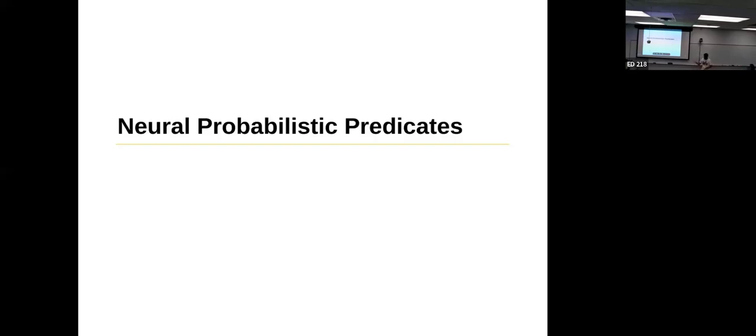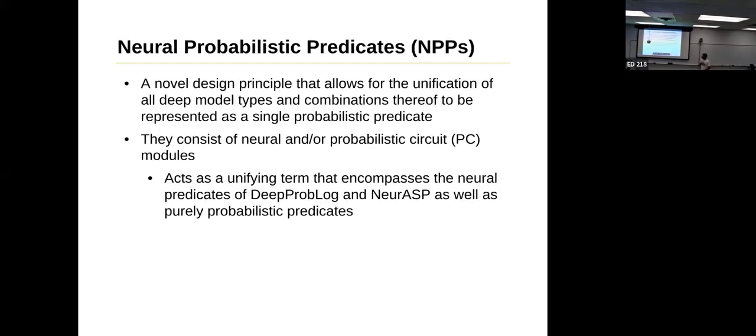Now that we've given you a rundown on DPPLs, we'll move on to neural probabilistic predicates. They're a novel design principle that allows for the unification of all deep probabilistic model types and combinations thereof to be represented as a single probabilistic prediction. They're mostly made up of neural and PC modules, and they act kind of like a unifying term that encompasses neural predicates of a DPPL as well as purely probabilistic circuits.